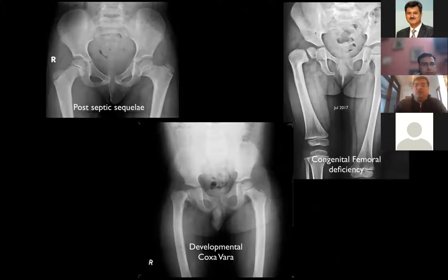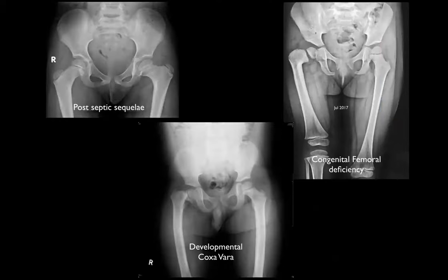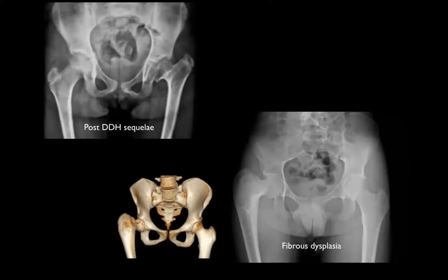To illustrate: the top left shows post-septic sequelae — you may have to tease out the history as there may be no clear history of sepsis; the child presents with gait abnormality around age three or four. Developmental coxa vara is seen at the bottom with clear radiological features. The top right shows coxa vara as part of congenital femoral deficiency. DDH sequelae managed with Pavlik harness can also result in proximal femoral growth arrest secondary to avascular necrosis leading to coxa vara.